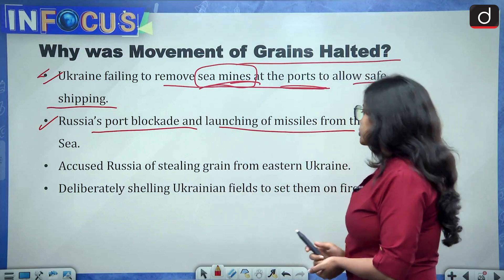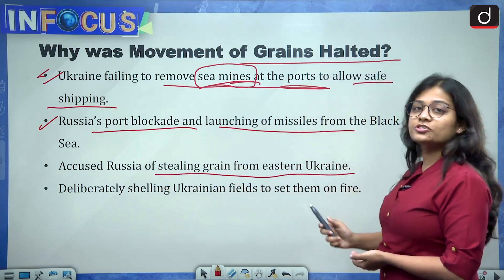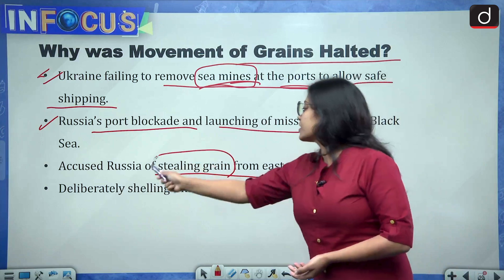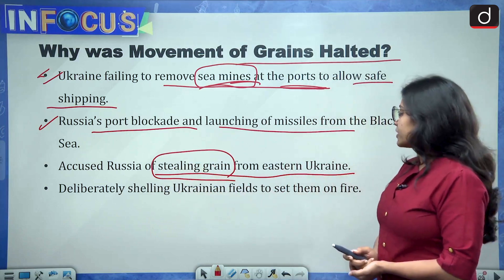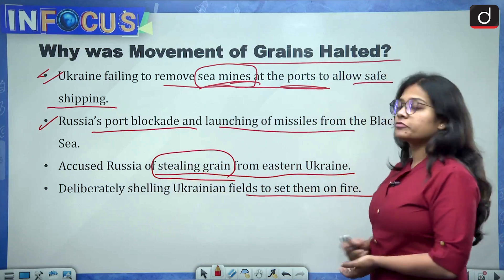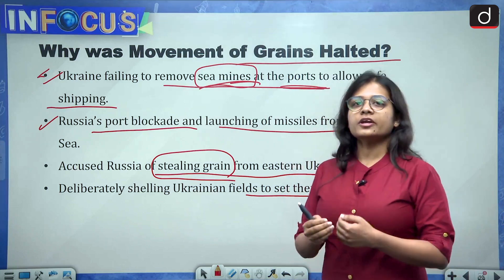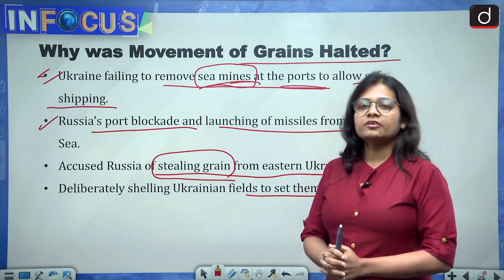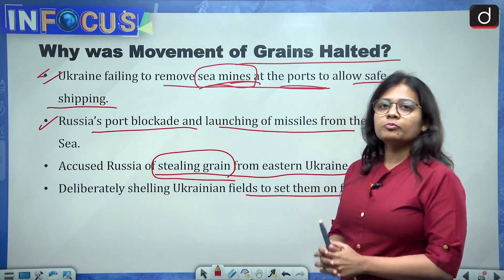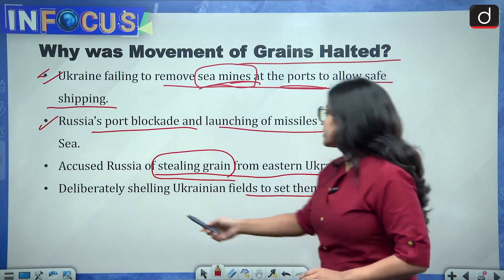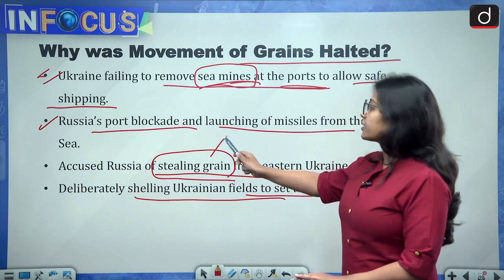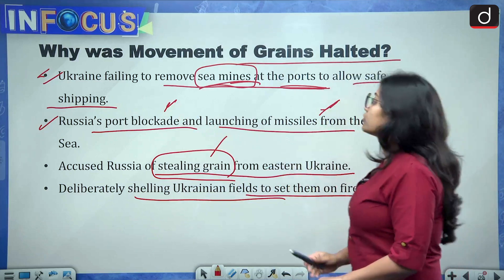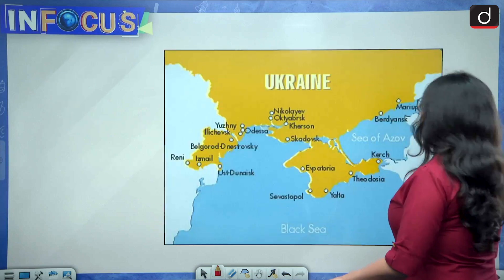Ukraine also accused Russia of stealing grain from eastern Ukraine and deliberately shelling Ukrainian fields to set them on fire. So Ukraine is saying that Russia is engaging in illegitimate actions — grain theft, port blockage, and launching missiles from the Black Sea — and this is why the halt of grain exports took place.